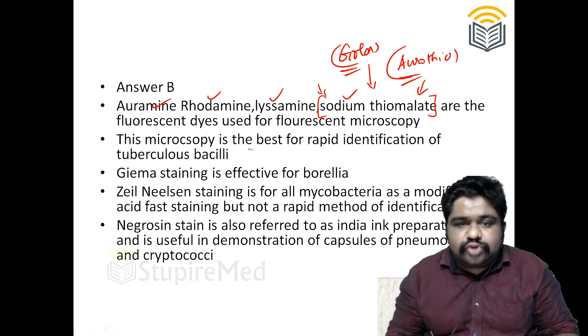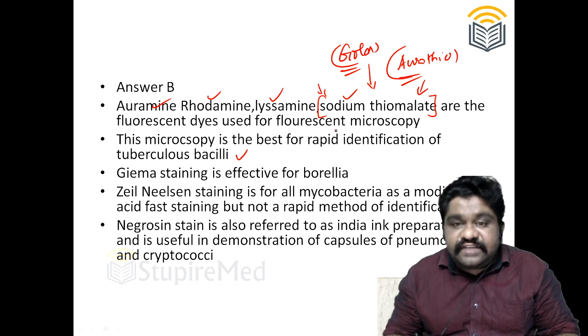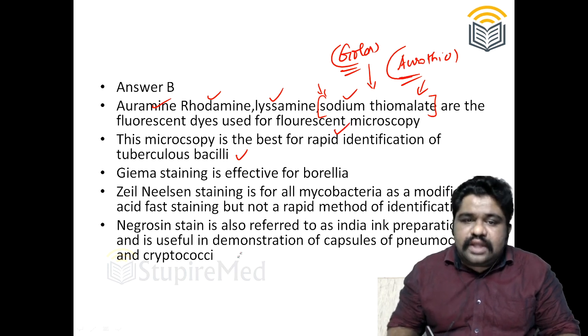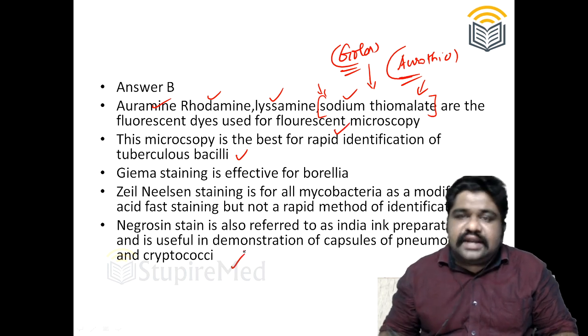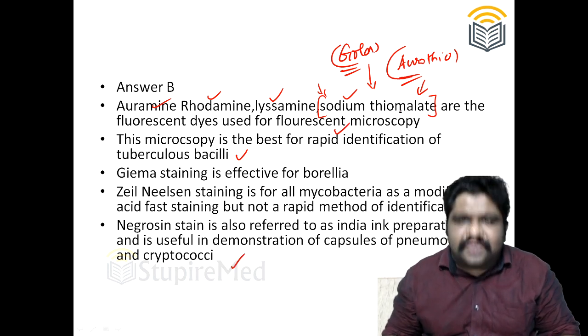Fluorescent microscopy is best for rapid identification of tuberculous bacilli. That concludes our discussion for this question. Thank you.